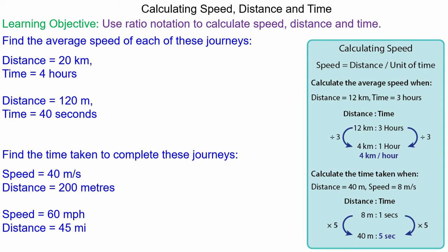In this lesson we're going to calculate speed as a measure of distance and time using ratio notation. So we start off by writing our ratio as a measure of distance to time.